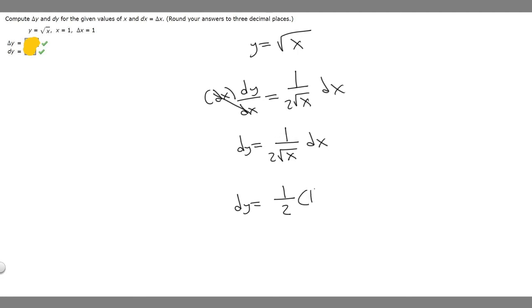So we're multiplying by 1, so dy is going to be equal to 1 half times 1, which is just 1 half. So that's going to be 1 half. Let's find delta y.